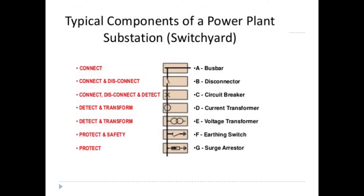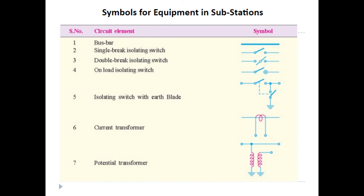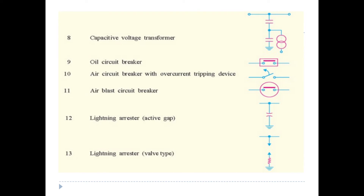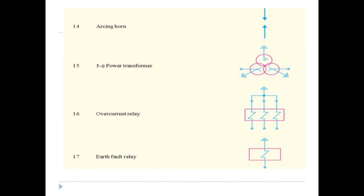We have different types of substation with different components: bus bar, disconnector, circuit breaker, current transformer, potential transformer, earthing switch, and surge absorber. Symbols include: single break isolator, double break isolator, on-load isolating switch, isolation switch with earth blade, current transformer, potential transformer, capacity voltage transformer, oil circuit breaker, air circuit breaker, over-current tripping device, air blast circuit breaker, lightning arrester, spark gap, lightning arrester valve type, arcing horn, three-phase power transformer, and over-current and earth fault relay.